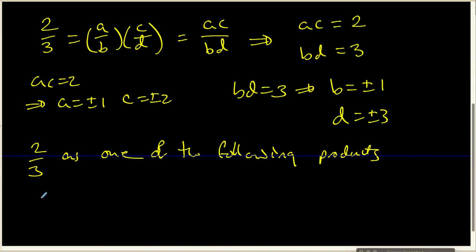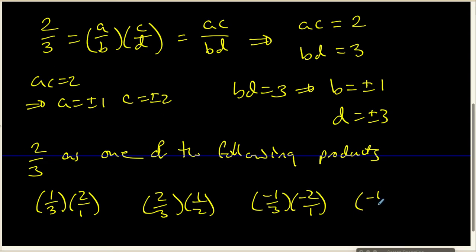We can think about writing 2/3rds as one of the following products. We could have a 1 over a 3 paired with a 2 over a 1. We could have a 2 over a 3 paired with a 1 over a 2, or we could have the negatives. And this actually exhausts all of the possibilities. And actually, I have a small mistake there. That should be a 1.